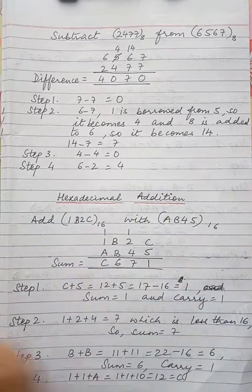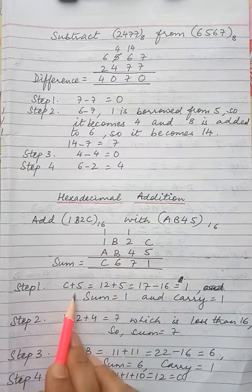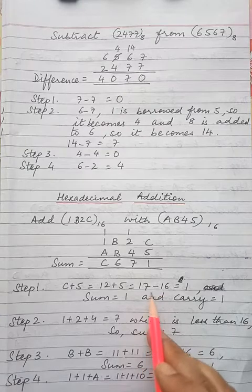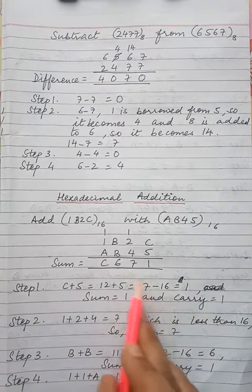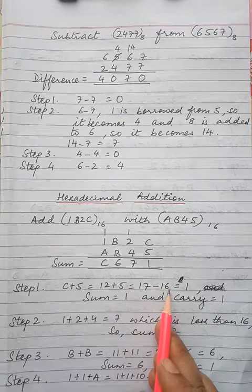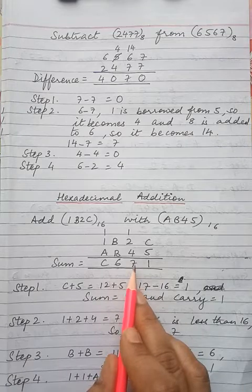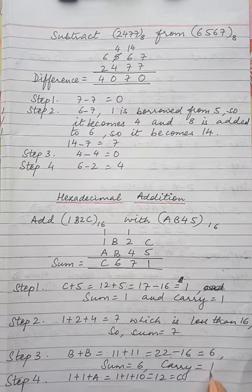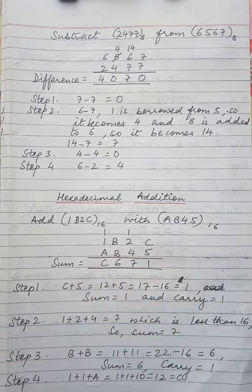Next is hexadecimal addition. Add 1B2CAB45 — both are hexadecimal numbers. When C is added to 5: C means 12, so 12 plus 5 is 17. Hexadecimal numbers have a base of 16, so subtract 16. Sum is 1 and carry is 1. Next step: 1 plus 2 plus 4 equals 7, written as it is. Next: B plus B is 11 plus 11 which is 22. Subtract 16 — sum is 6 and carry is 1. Fourth step: 1 plus 1 plus A, that is 1 plus 1 plus 10 which is 12. 12 equals C, so write C here. I hope this is clear to all of you.